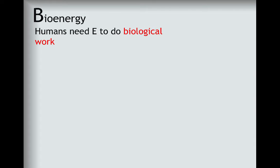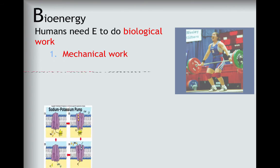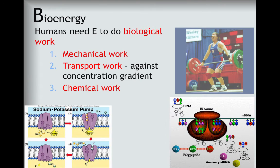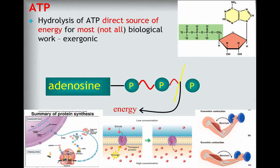Humans need energy to do biological work, of which there are three types: mechanical work, transport work, and chemical work. The direct source of energy for doing biological work comes from the hydrolysis of ATP. We hydrolyze a high energy bond, and the energy that's released can be captured to do biological work.